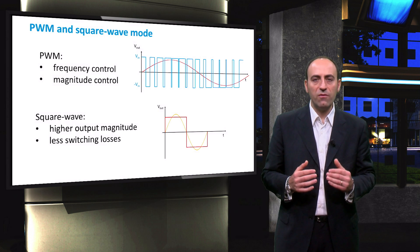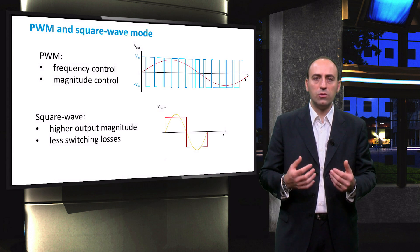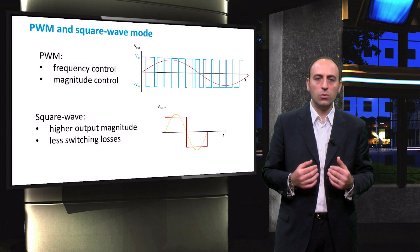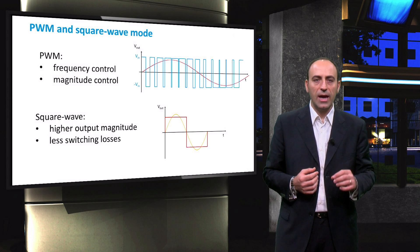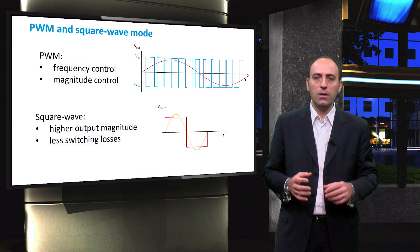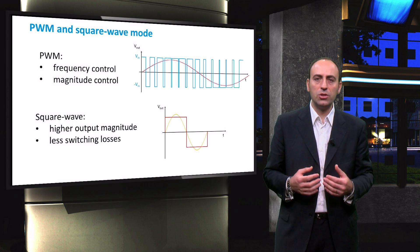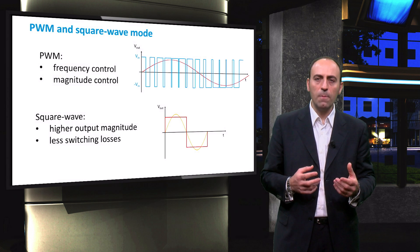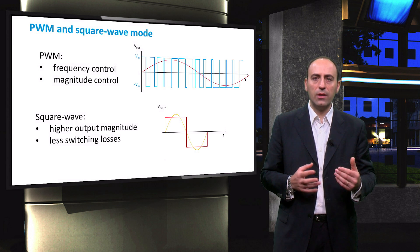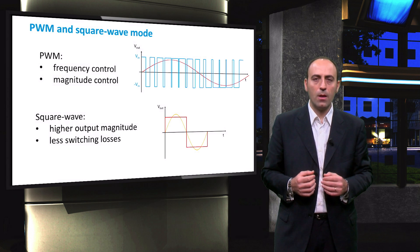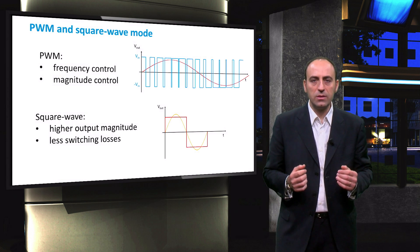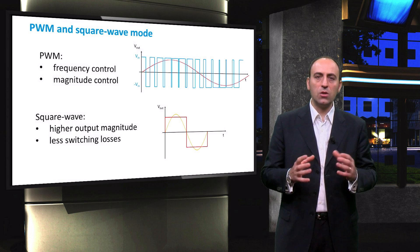The square wave mode, on the other hand, gives a higher output magnitude since the amplitude modulation ratio is constant and equals 4 over pi. This makes the peak output voltage around 1.3 times the input voltage. Also, the switches are turned on and off only once in a period, reducing the switching losses. One negative aspect of this mode is that the output wave amplitude is not controllable anymore.